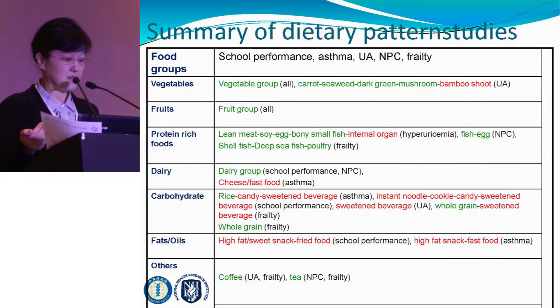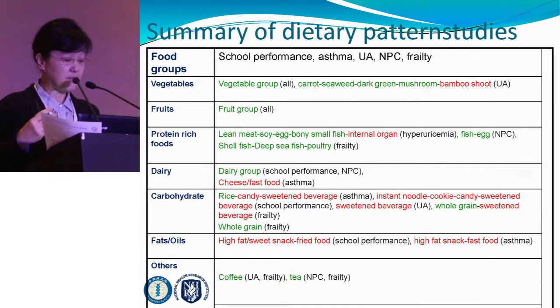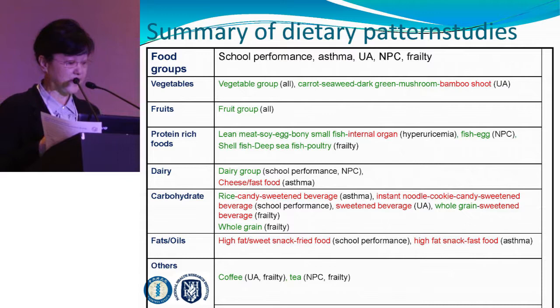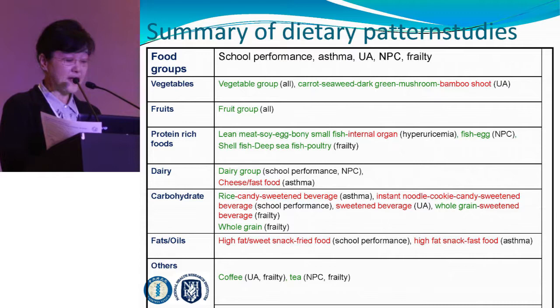Dairy groups are protective in terms of school performance. Fast food is harmful, actively associated with asthma. In terms of carbohydrate sources, rice and whole grains are protective, while sweetened beverages, instant noodles, and sugary drinks are not. I'd like to draw your attention particularly to fat: high-fat foods and foods containing both fat and sugar are negatively associated with school performance and asthma. We believe the frying process is something we need to think about carefully, and it may have to do with oil quality — in Asian countries we commonly use soybean oil to fry food, while different oils are used in Western and other regions.